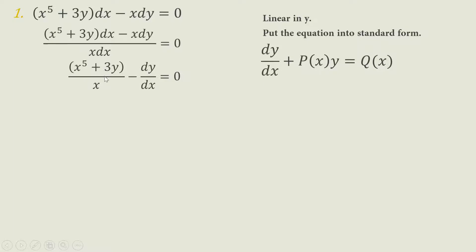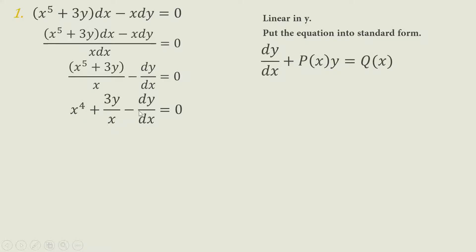This results to X⁵ plus 3Y over X minus DY/DX equals zero. We separate X⁵ and 3Y into two terms: X⁵/X is X⁴, plus 3Y/X minus DY/DX. Since our DY/DX is negative but in standard form it is positive, we multiply the equation by negative one. So DY/DX is now positive minus 3Y/X, and we transfer X⁴ to the right side.